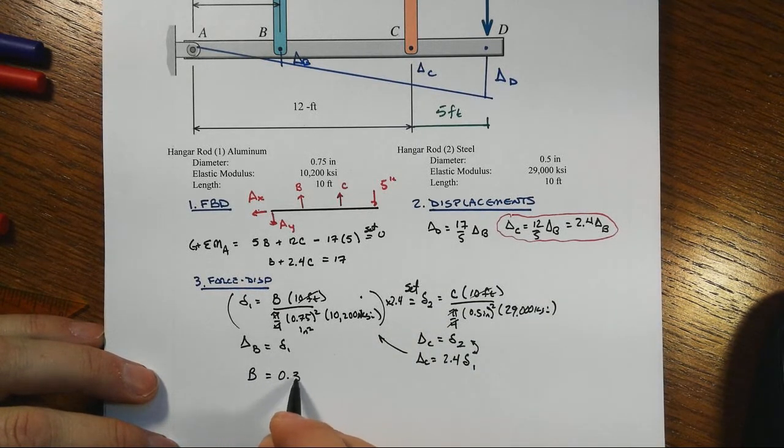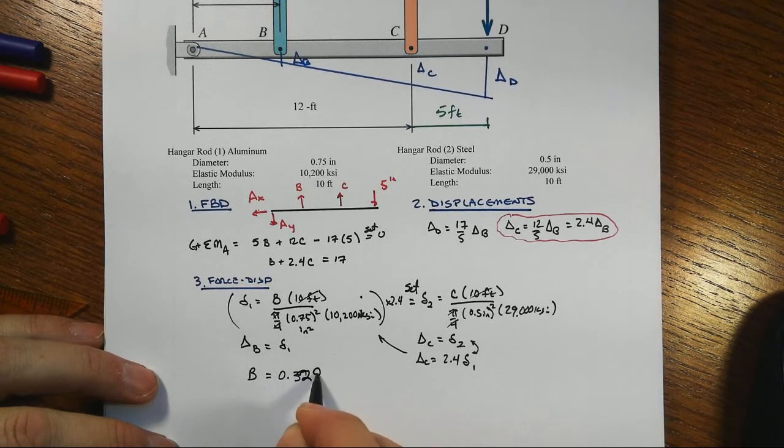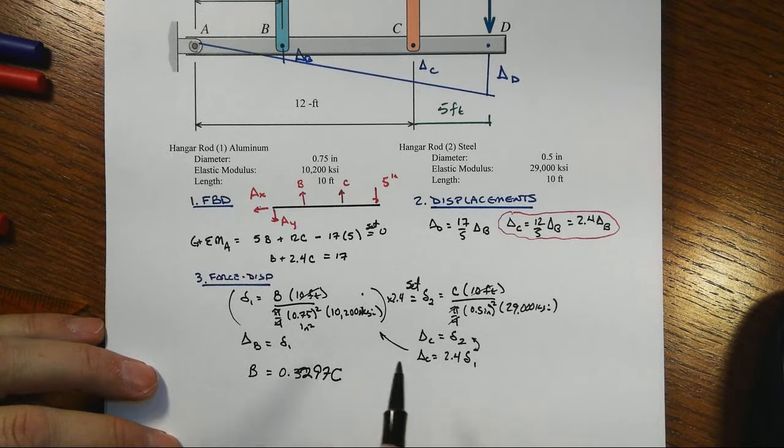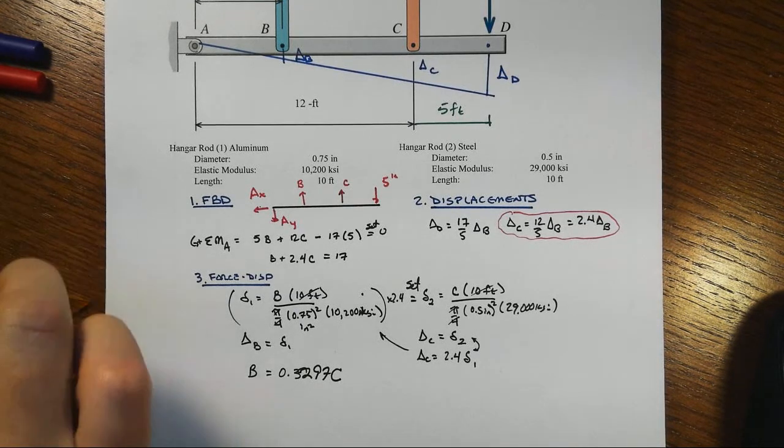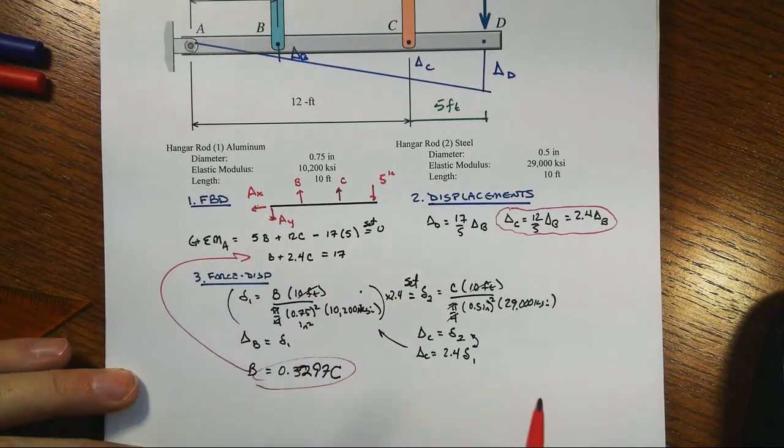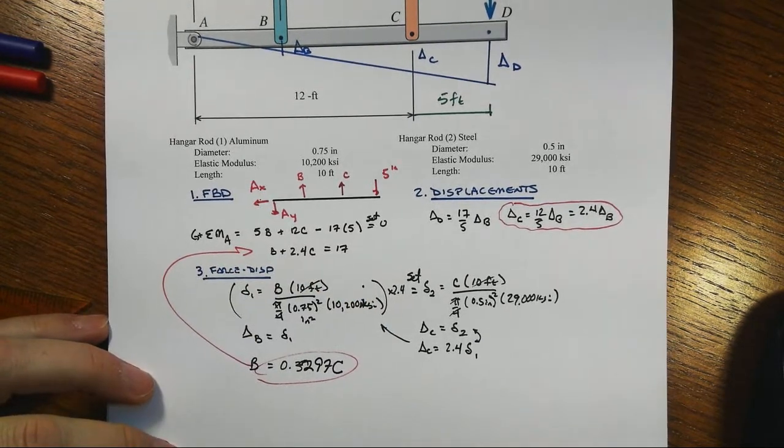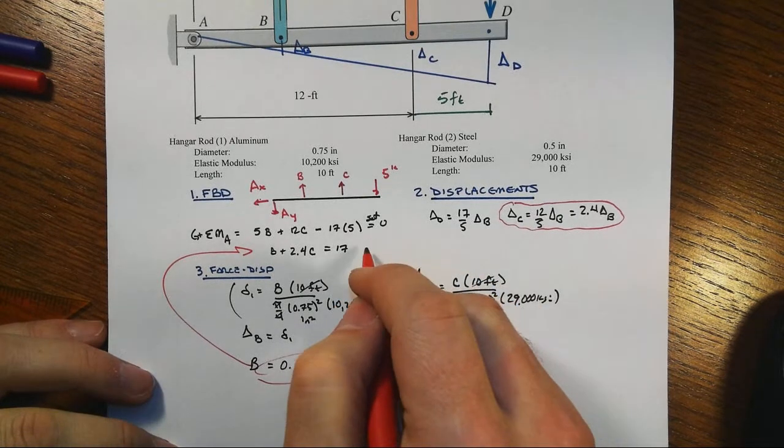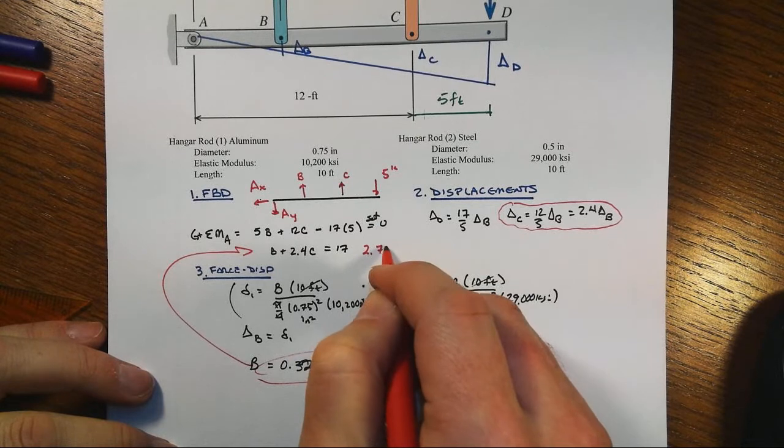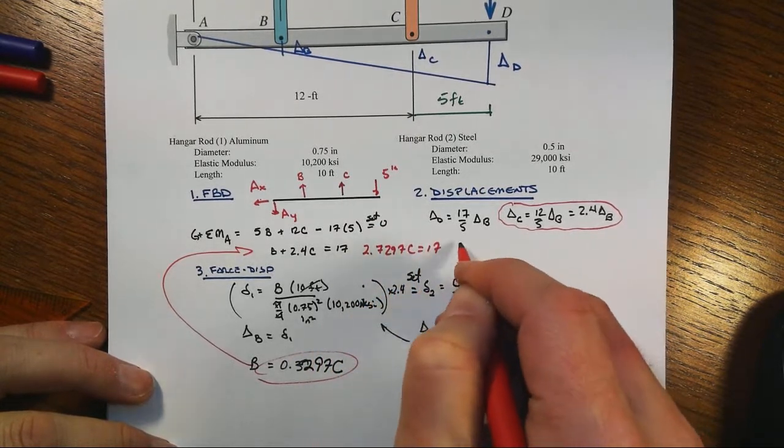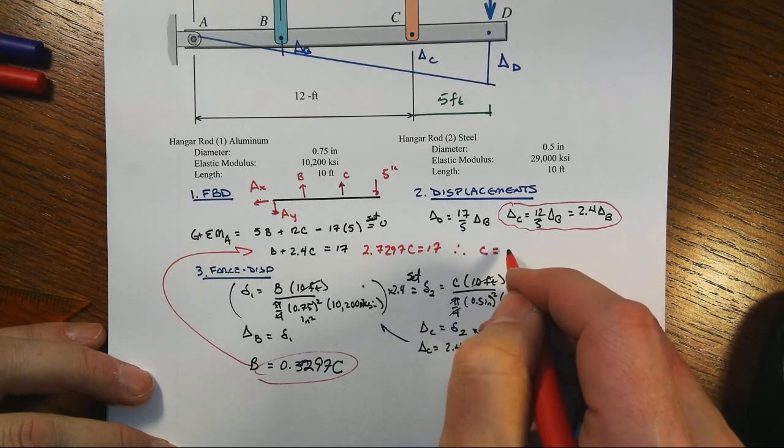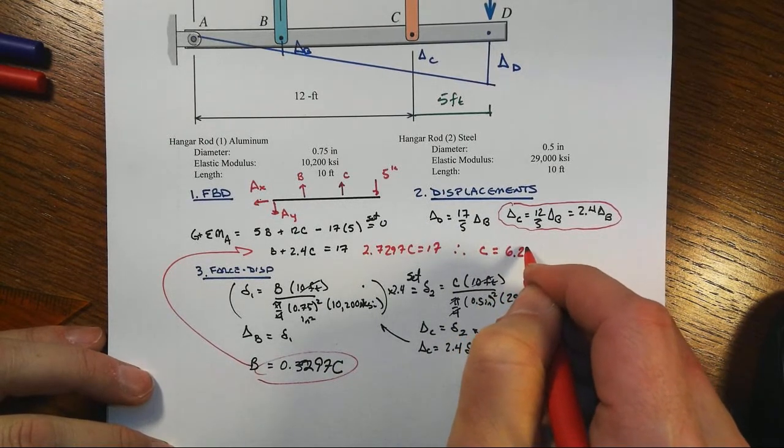We can substitute that in to our equation that we got from equilibrium. And that will tell us that we have 2.7297 C equals 17. So therefore, C is going to be equal to 6.23 kips.